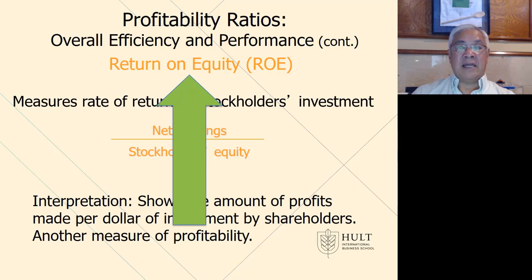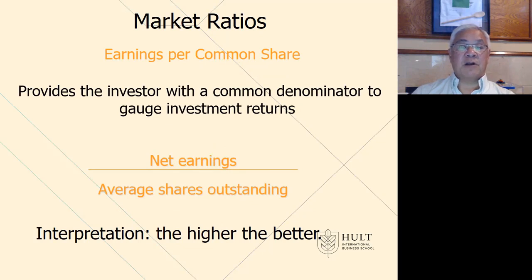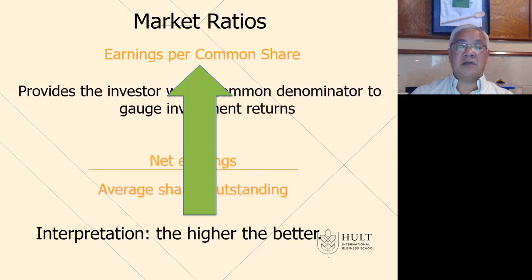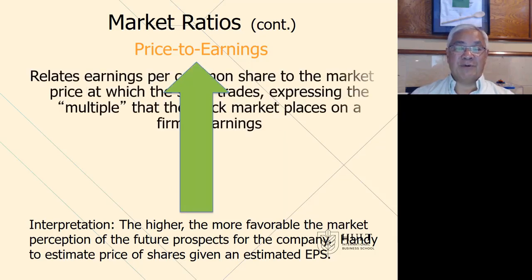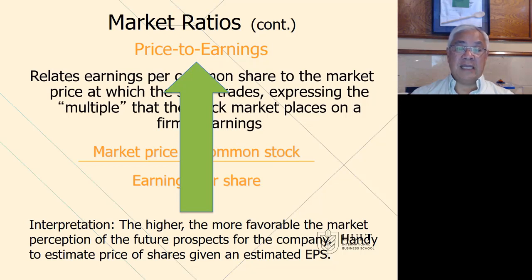Earnings per share is a market-based measure: net earnings compared to average shares outstanding. The market uses this to gauge things like the price-earnings ratio. We want higher and higher net earnings for every share outstanding — the goal is to increase EPS. The price-earnings ratio has the market price of stock as the numerator and earnings per share as the denominator. For every dollar of earnings, how much market value does your stock have? We want it high — the higher the PE, the more valuable you appear in investors' eyes, and they bid up the price of your stock.